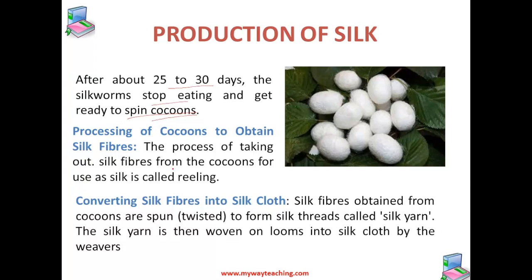The pile of cocoons is placed in hot water, and this hot water causes the silk fibers of the cocoon to separate out — that means they are set into boiling water. The long silk fibers are obtained by unwinding the thread from the cocoons. This process of taking out silk fiber from the cocoons is called reeling, and it is done in special machines which unwind the fiber from the cocoon.